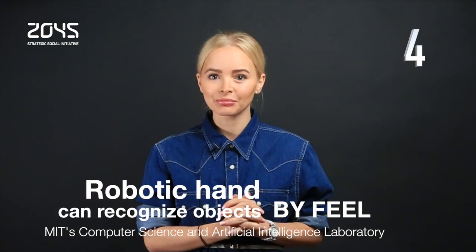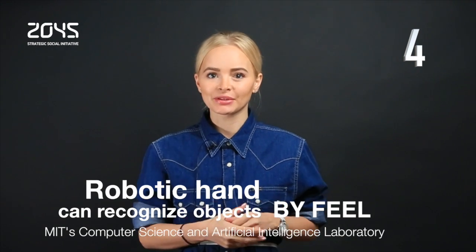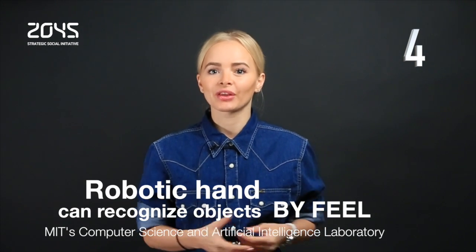Robots have many strengths, but delicacy traditionally hasn't been one of them. Rigid limbs and digits make it difficult for them to grasp, hold, and manipulate a range of everyday objects without dropping or crushing them. Now, a soft robotic gripper can gently pick up and identify a wide array of objects.